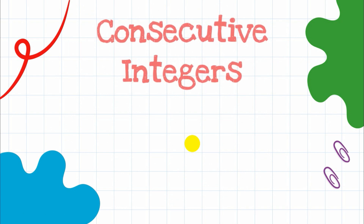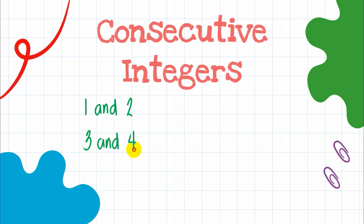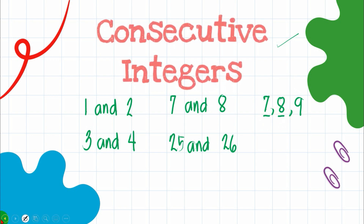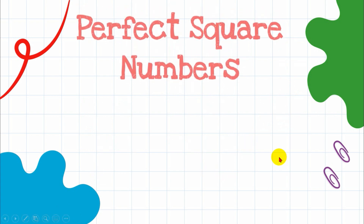When we say consecutive, it means the numbers are in order — for example, one and two, three and four, seven and eight, 25 and 26. Numbers like seven, eight, nine are also consecutive, but for this lesson we only need two consecutive numbers.